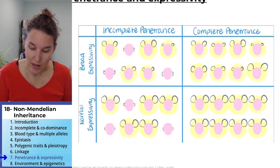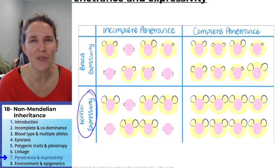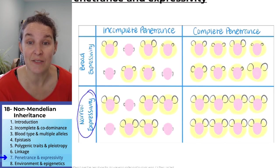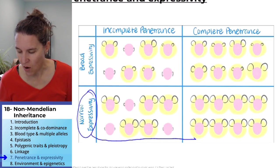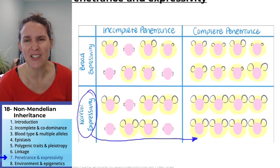You can have narrow expressivity, which means that there's no variation. There's very little variation in expression and look at the mouse ears in all of these situations. There's no variation. If you have mouse ears, you have big old mouse ears.